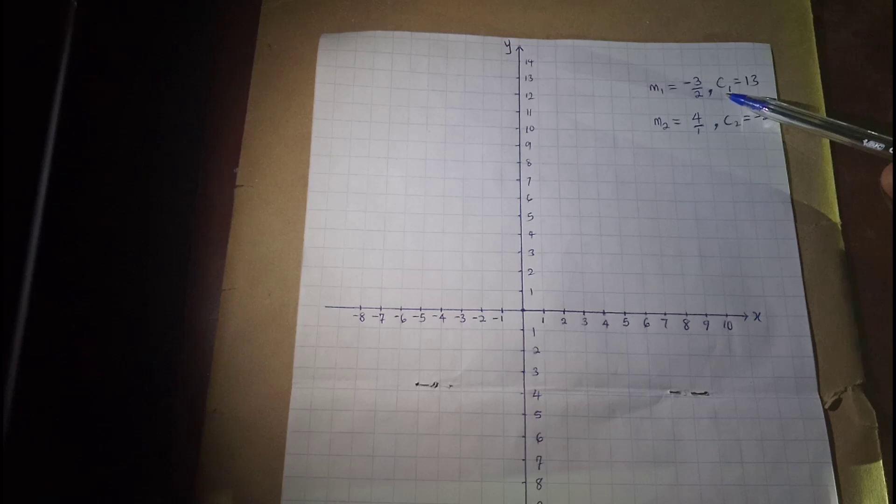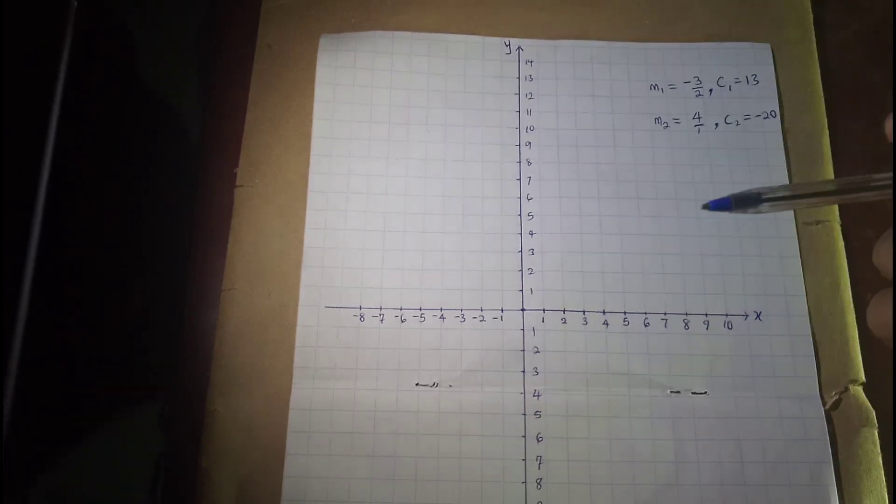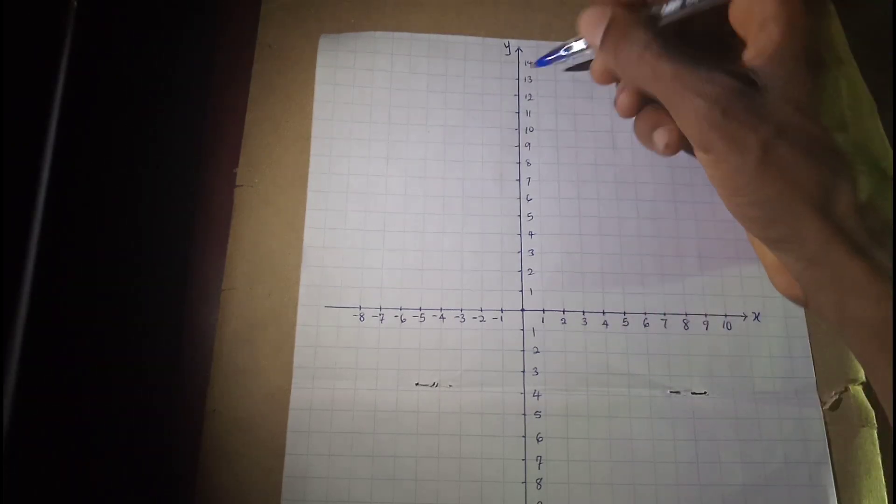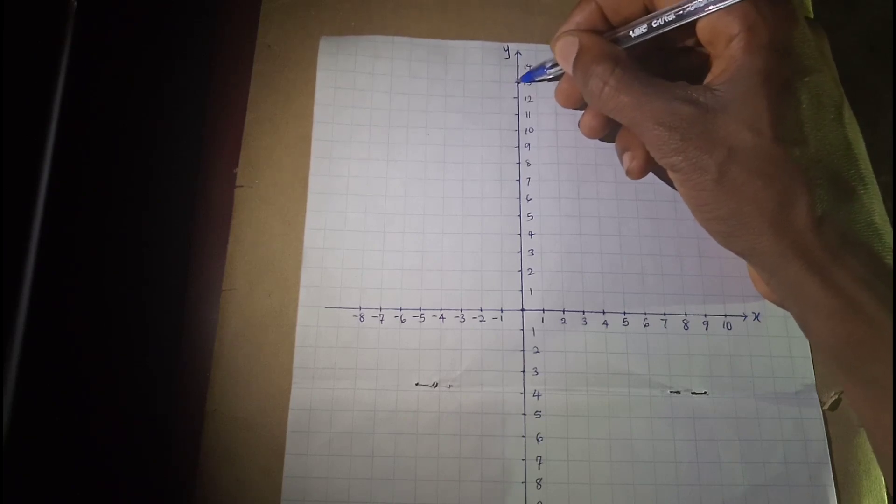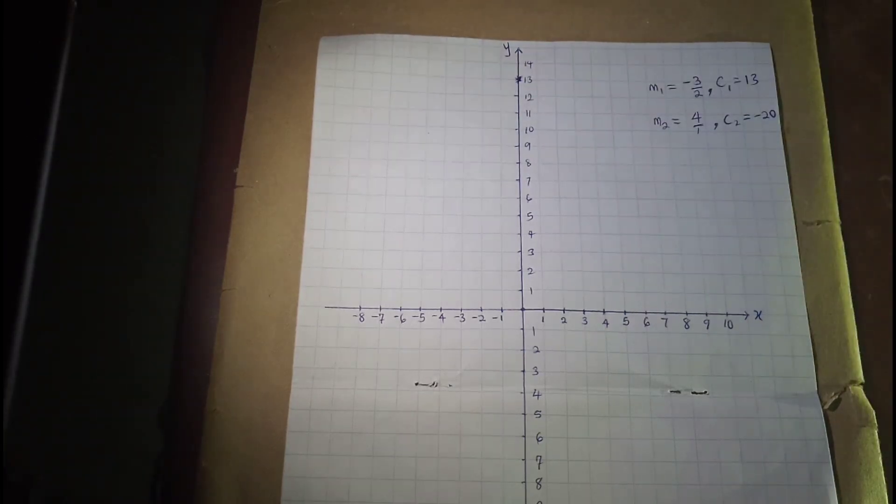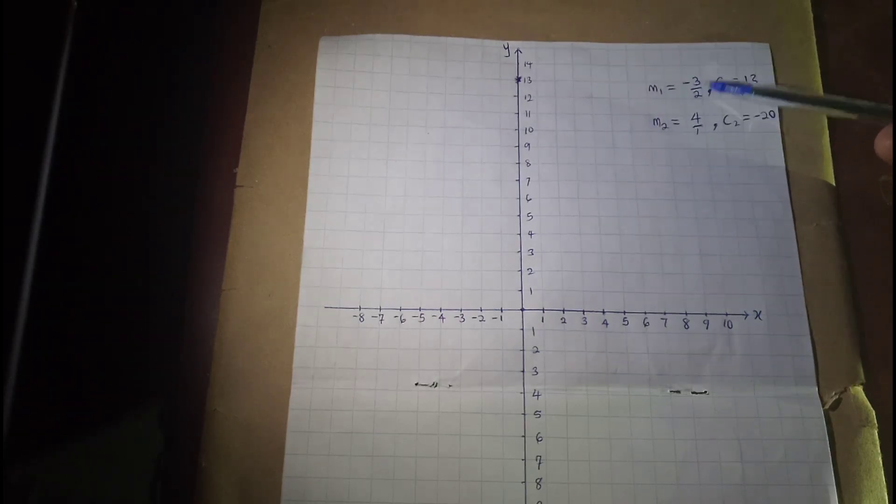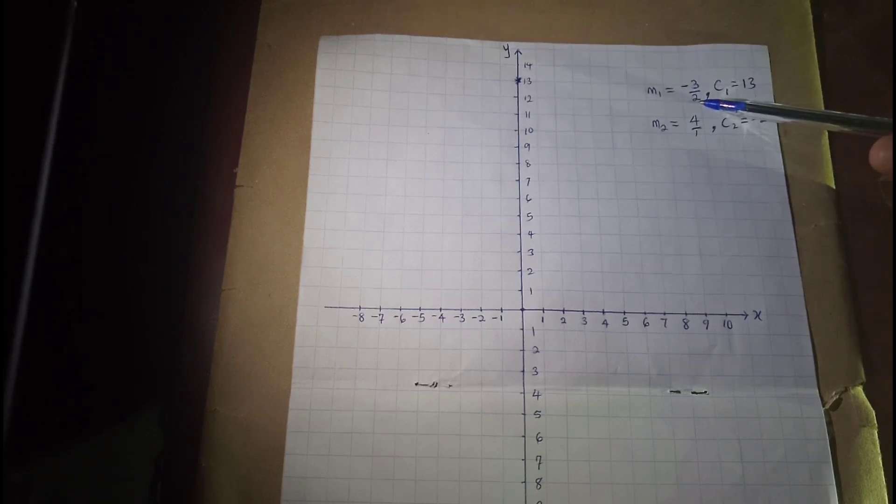You have to plot the intercept first, which is 13. Therefore, we have to locate 13 along y-axis, which is this. We have 13 here. So we need to put our star there to indicate our intercept. Then our slope, this is rise, this is run. We have rise of negative 3 and a run of positive 2.